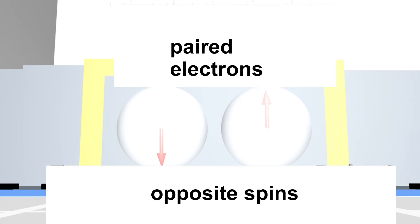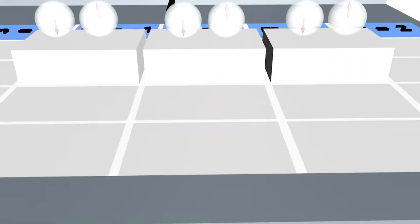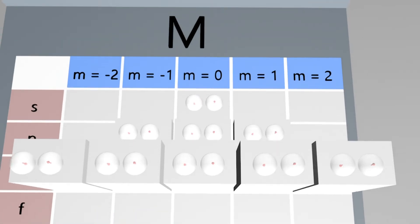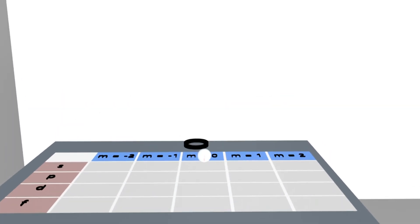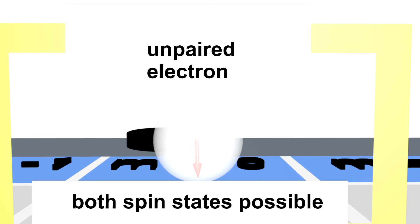If you look at the electrons on the other shells, you can see that they consist entirely of paired electrons. Only on the highest shell there is a single unpaired electron.